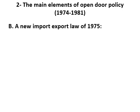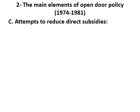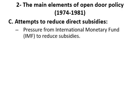The second element of the open door policy was a new import and export law of 1975. That law enabled private sector participation in imports of certain goods and intermediate products. It also encouraged private sector investment by facilitating the procurement of its input production needs.